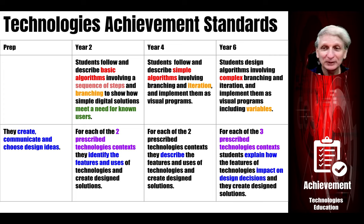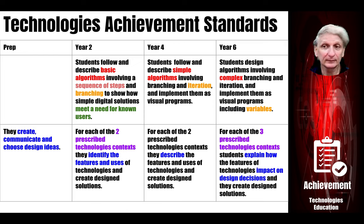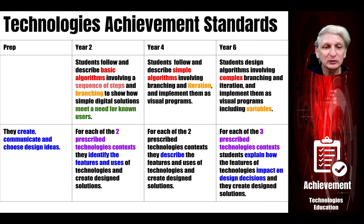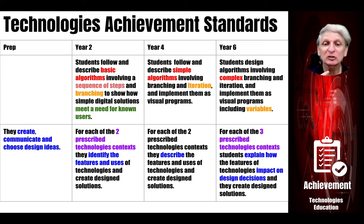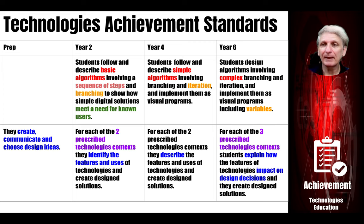In terms of creating, communicating, and choosing design ideas, students do that from prep — it's important that students actually create something, communicate their ideas, and choose their ideas, not just follow the teacher's idea. By the end of year two, they need to identify the features and uses of technologies to create a design solution. By the end of year four, they need to be able to describe those features. And by the end of year six, they need to be explaining how features impact upon their designs — for example, how different sheets of paper affect their paper plane designs.